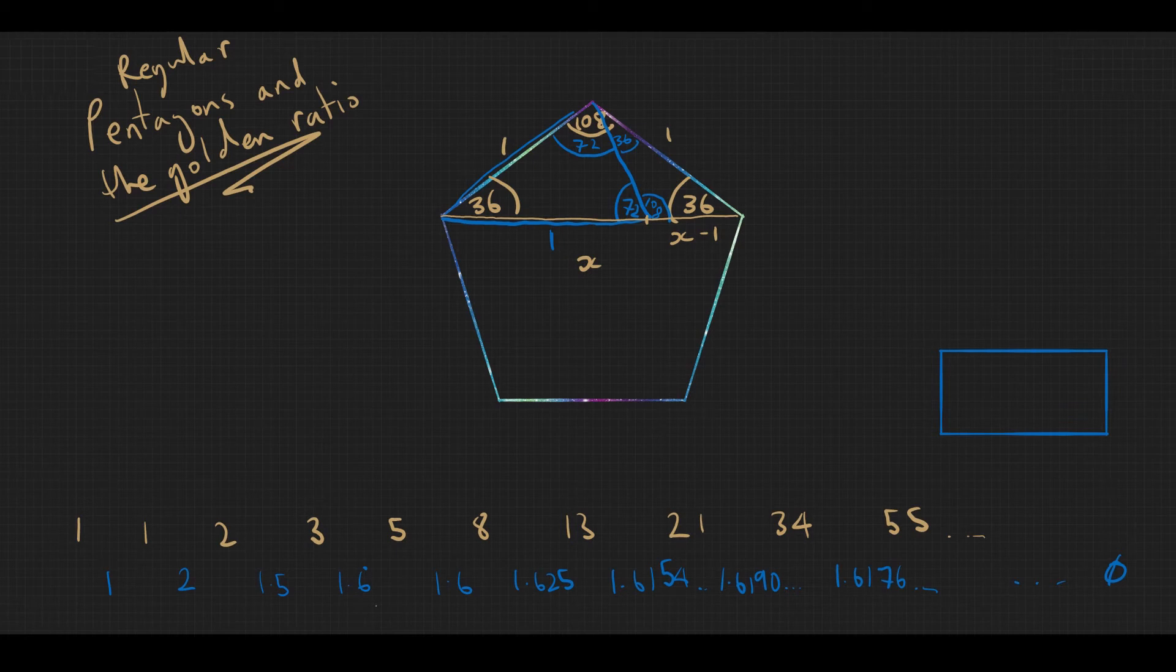So what we've got here is another isosceles triangle because 36 and 36. If this is x minus 1 along there, then this must also be x minus 1 along there. So we've got two isosceles triangles now. I know this is a little bit messy, but have a little draw of it yourself. We've got an isosceles triangle that we started with—the large one—we've created a different isosceles triangle here with side lengths 1, 1, and x minus 1, and we've got this smaller one over here.